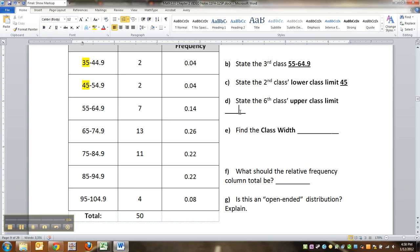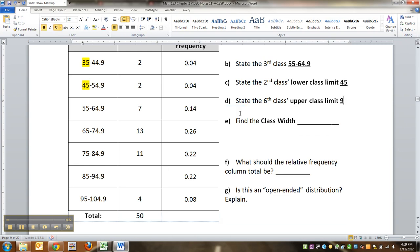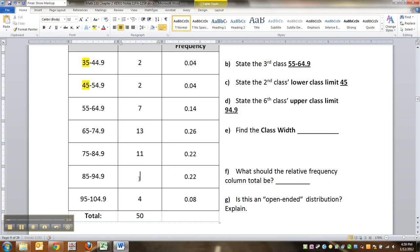Now we need to ask what is the sixth class's upper class limit. Remember, first class, second class, third class, fourth class, fifth class, sixth class. So the sixth class's upper class limit is 94.9. And it occurs to me I never put this in there - that was 11.